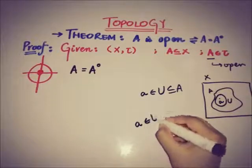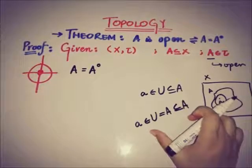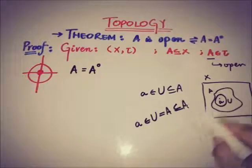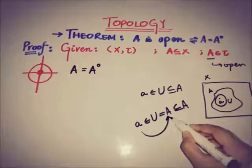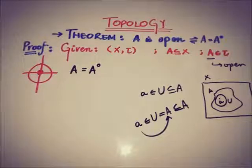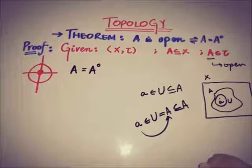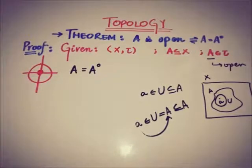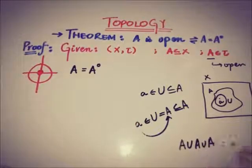In this case, since A is itself an open set, we can write that a belongs to U, where U equals A, and A is a subset of A. This satisfies the definition of an interior point. So by the definition of interior — that the interior of A is the union of all open neighborhoods — we take the union of all such open neighborhoods.